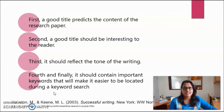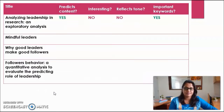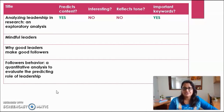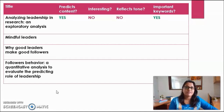Let's evaluate all the titles based on these four criteria. For 'Analyzing Leadership in Research: An Exploratory Analysis,' the title gives enough to predict the content — as a reader you could expect what the study covers. But is it interesting? No. Does it reflect the tone of what the researcher conducted? No. And does it provide important keywords for searching on Google Scholar? Kind of — you could search for leadership and exploratory analysis, but only somewhat.